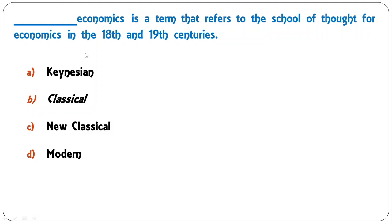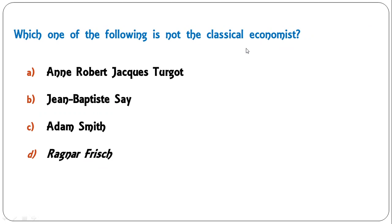Next question: dash economics is a term that refers to the school of thought for economics in the 18th and 19th century. The correct answer is classical economics — it is not Keynesian, not new classical, not modern. Classical economics refers to the school of economic thought during the 18th and 19th century.